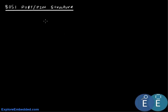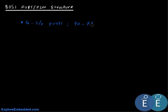We will continue the discussion of the 8051 architecture and discuss the port and pin structures of 8051. We have already seen that 8051 has 4 IO ports, P0 to P3, and each of these 4 IO ports have 8 port pins, so effectively we have 32 input-output lines.